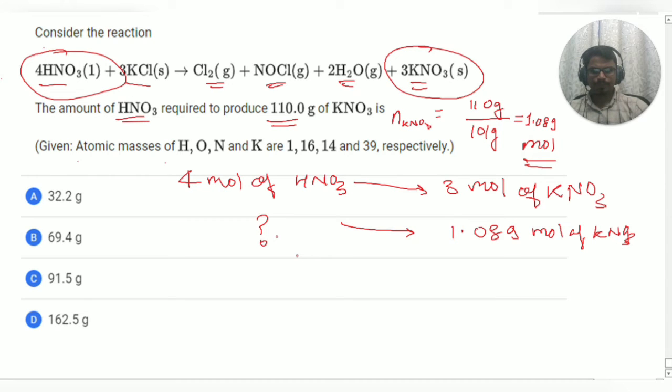So, let us see, let us take this as X and we are supposed to calculate the value of X. So, how we are going to do it? With the help of unitary method. So, X is equals to 4 by 3 multiplied by 1.089. So, further it is going to become 1.452 mole.